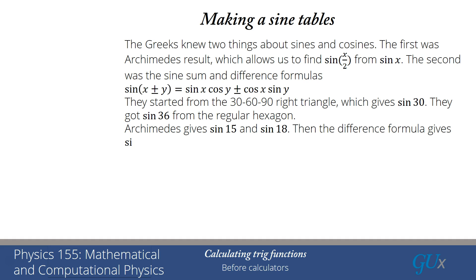Then they used the difference formula to give them sine of 3 degrees. Then they brought in Archimedes again, twice, to give sine of one and a half degrees and then sine of three quarters of a degree.